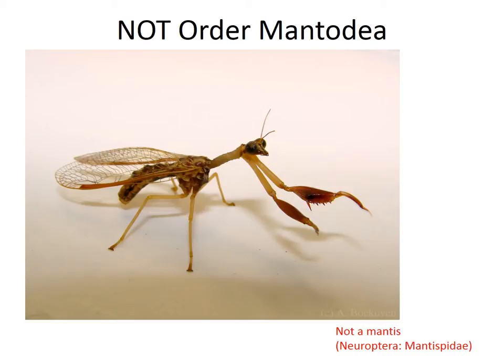This, on the other hand, is not a mantis. This is actually a member of the order Neuroptera, which we'll talk about later, belonging to the family Mantispidae. The common name for this family is, somewhat unsurprisingly, mantisflies. These fellows do look a lot like mantises, but note that their wings are kind of thin and membranous and at least partially see-through — and they're not at all leathery, like in mantises.